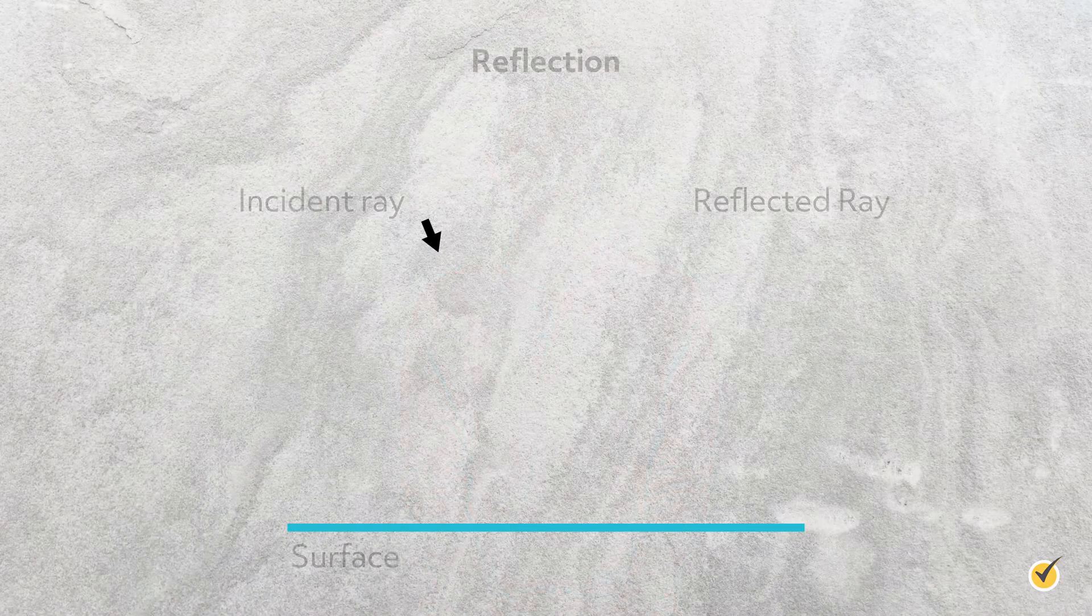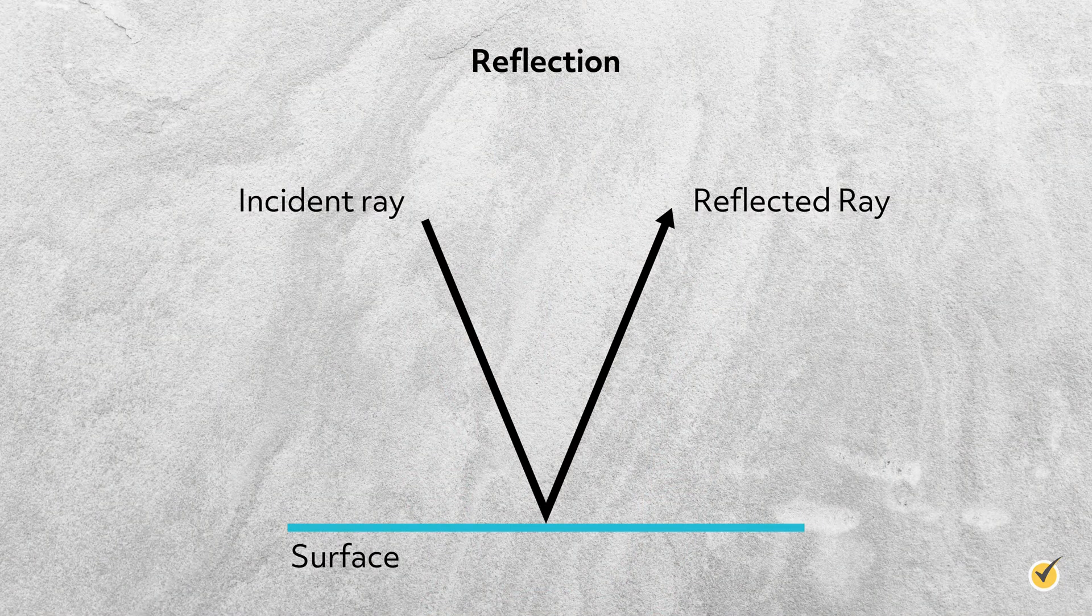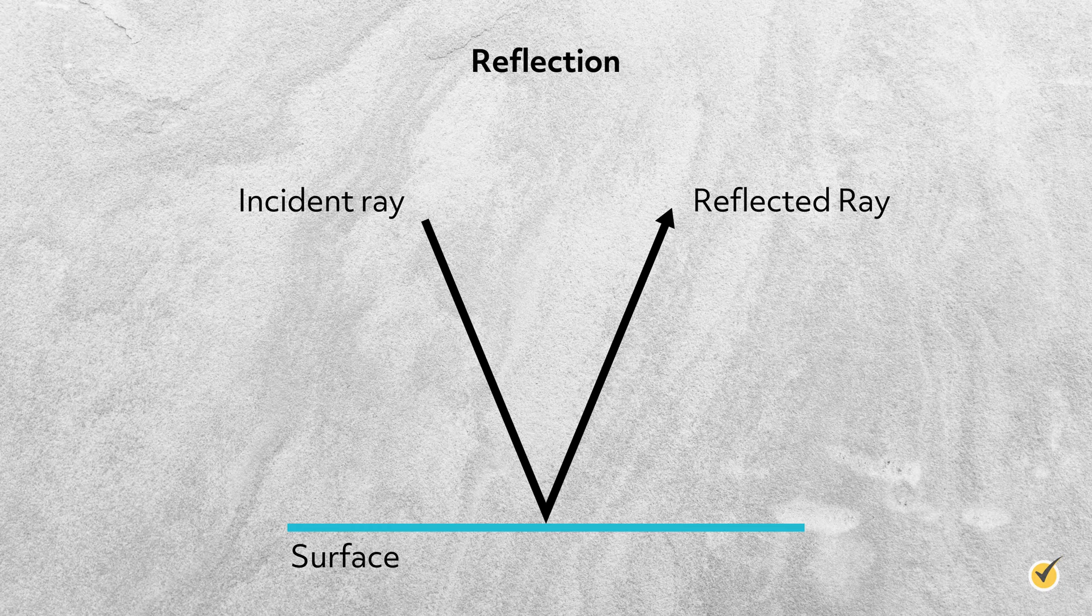You're probably already familiar with this concept. Reflection occurs when a ray of light of a particular frequency hits a surface and bounces back off. You may have heard the phrase, the angle of incidence is equal to the angle of reflection.